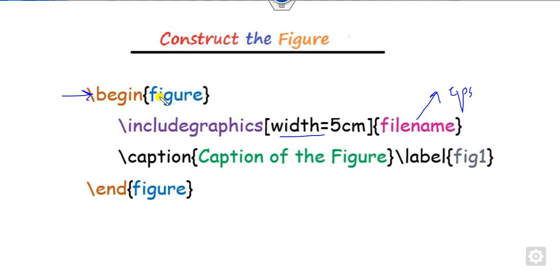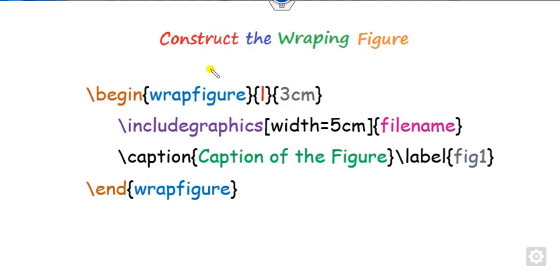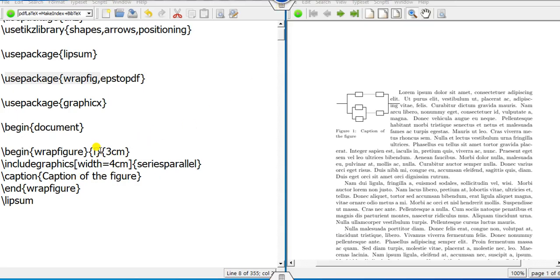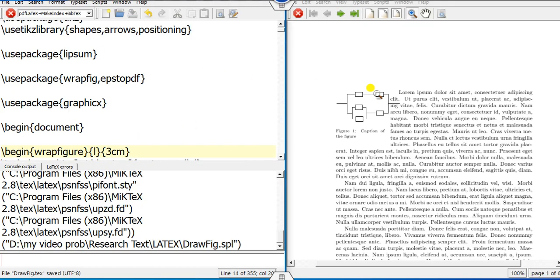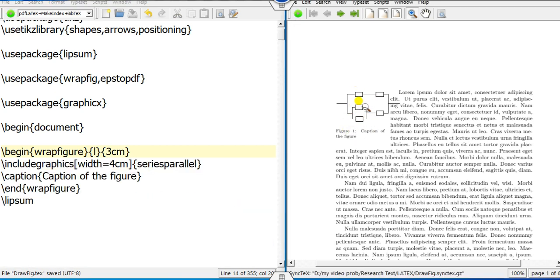Now, how you can wrap the text? Instead of writing this, you have to replace them with wrapfigure. You can see I have used left, three centimeters. So if I run the file, you can see that text is written on the left hand side, but there is some overlapping between them.